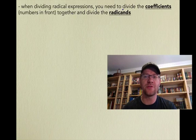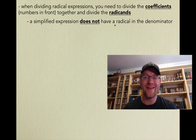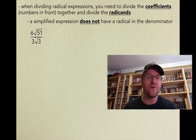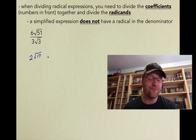When dividing radical expressions, you divide the coefficients and the radicands. The simplified expression must not have a radical in the denominator. Our first example is 6√51 divided by 3√3. We divide the coefficients: 6 divided by 3 is 2. And 51 divided by 3 is 17. So the answer is simply 2√17 — you can just straight-up divide in this case.